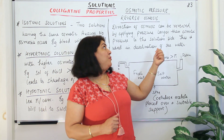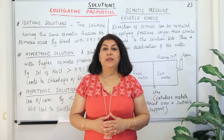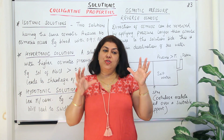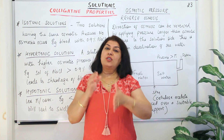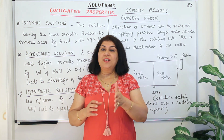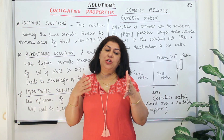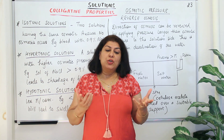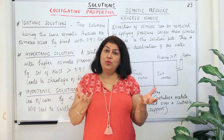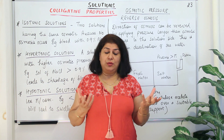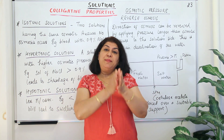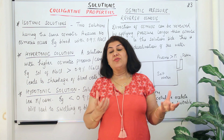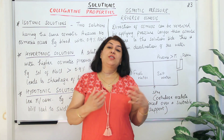In the previous video, that is video number 22, I introduced the fourth colligative property, that is osmotic pressure. We understand that osmosis is a process where you have a solution and a solvent, or two solutions, across a semi-permeable membrane. The solvent molecules cross through the semi-permeable membrane from a lower concentration of solution to a higher concentration of solution. The condition for osmosis to occur is that the two solutions should have different concentrations, and the presence of a semi-permeable membrane is essential. The difference between the concentrations of the two solutions decides whether osmosis takes place or not.